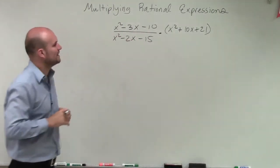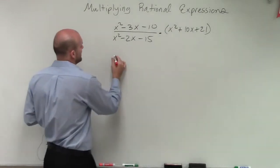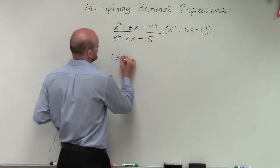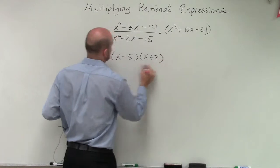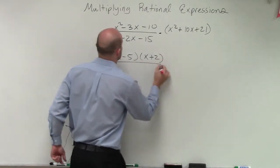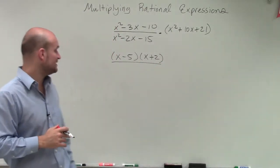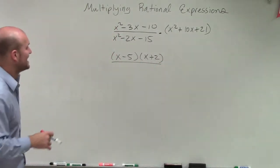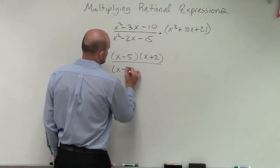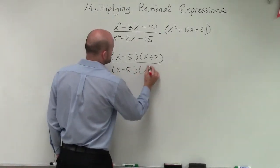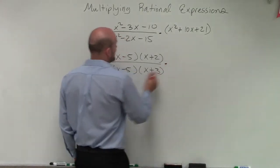What two numbers multiply to give me negative 10 and add to give me negative 3? I can rewrite that as x minus 5 times x plus 2. Then in my denominator, I want two numbers that multiply to give me negative 15 but add to give me negative 2, so that can be x minus 5 times x plus 3.